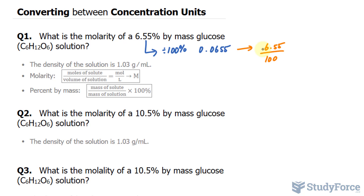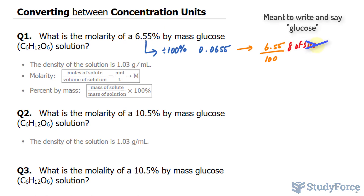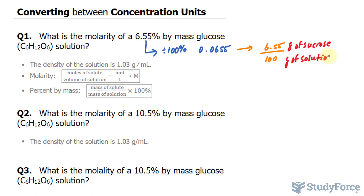If you take 6.55 over 100, you'll end up with this percentage. The units at the top can be grams of glucose, and the units at the bottom will be grams of solution — the mass of the solution.